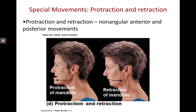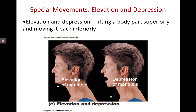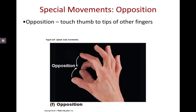Protraction is when the mandible juts forward, becoming more anterior than the maxillae, whereas retraction is pulling the mandible behind the maxillary bones. Elevation occurs when you bring your jaw up, and depression is when you bring your jaw down — so when eating, you perform elevation and depression of the mandible. Opposition is simply when you touch your thumb to any of your other fingers.